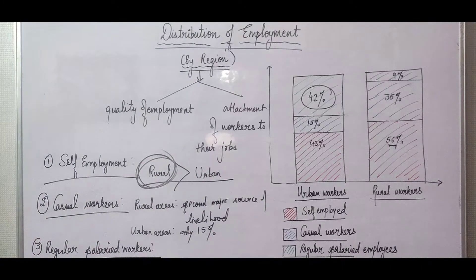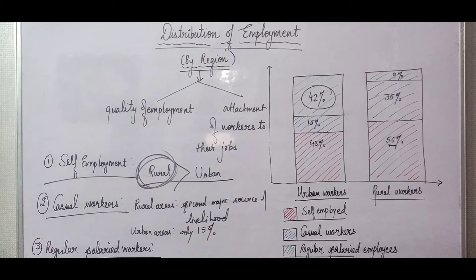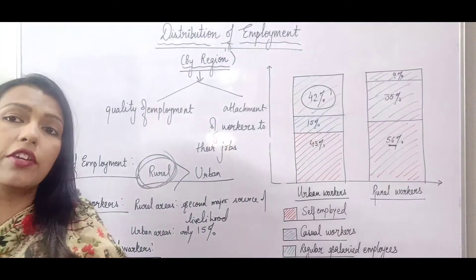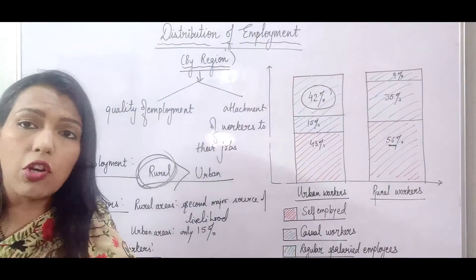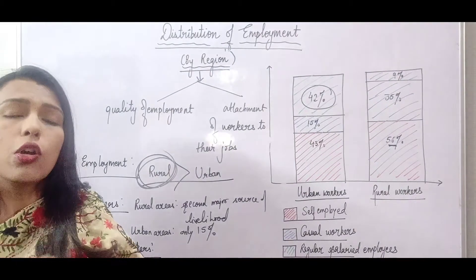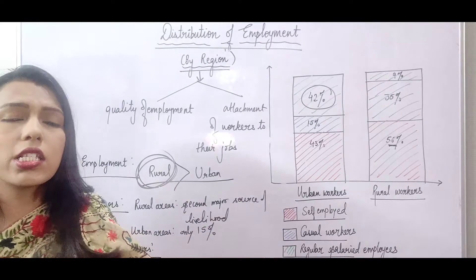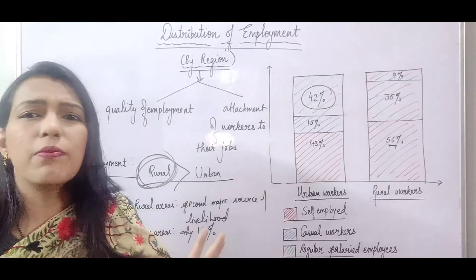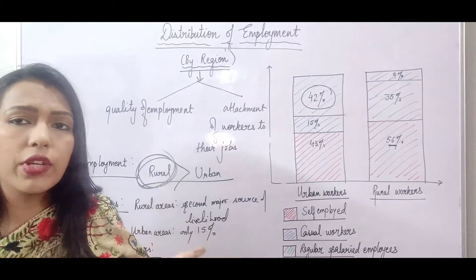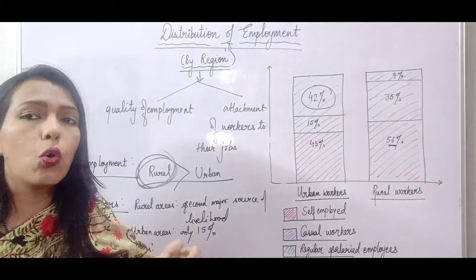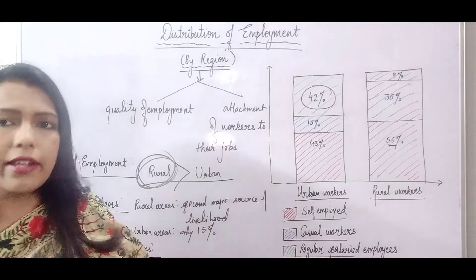But in rural areas, regular salaried jobs account for only 9 percent. The major reason is that regular salaried jobs require a higher level of literacy, higher level of skills, and higher level of qualification. Urban people acquire this through proper education. But in rural areas, people do not give much importance to education and literacy, which is why they don't have the required qualifications and don't enter regular salaried jobs.